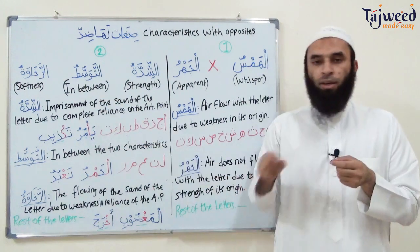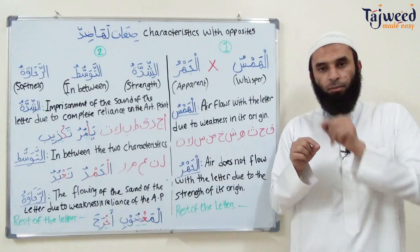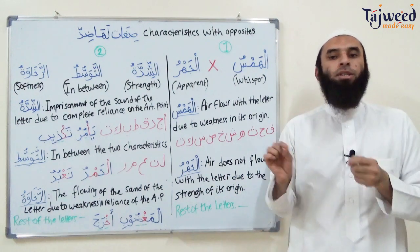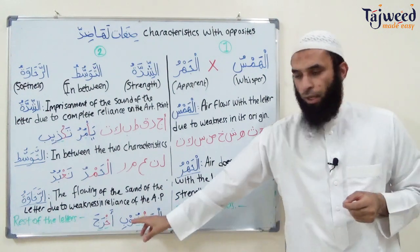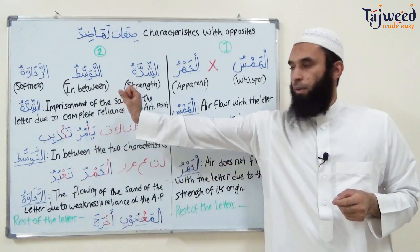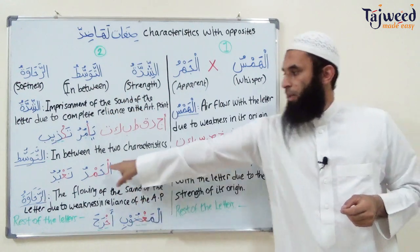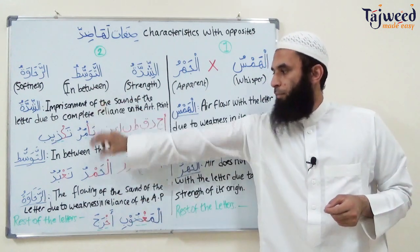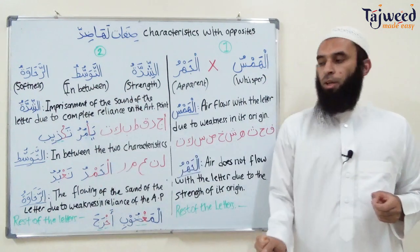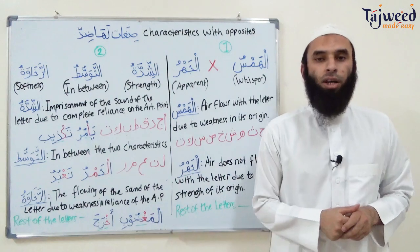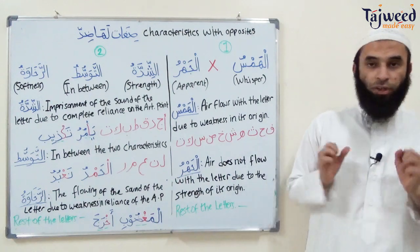To compare all three: al-Shidda — touch and quickly let go, there's a gap before the next letter. Al-Rakhawa — touch, hold, no gap. Al-Tawasut — partially a gap, partially no gap. So three groups: al-Shidda, where the sound does not flow; the opposite al-Rakhawa; and in the middle, al-Tawasut.